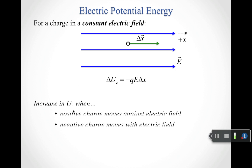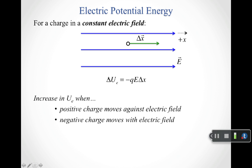Using ΔUE = −qEΔx: this term is positive — meaning we increase electric potential energy — when a positive charge (q positive) has a negative delta x, meaning it moves against the electric field. Or if we have a negative charge (q negative), the two negatives cancel and we need delta x positive, meaning the negative charge moves in the direction of the electric field to increase the potential energy.